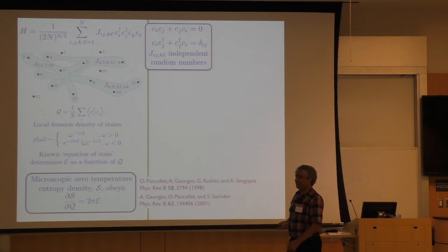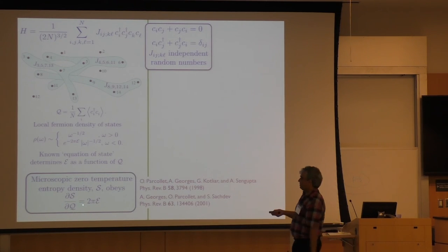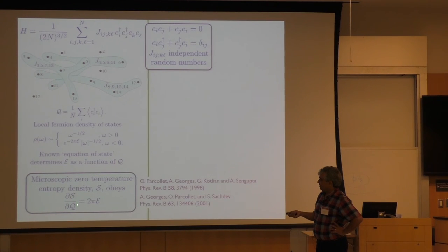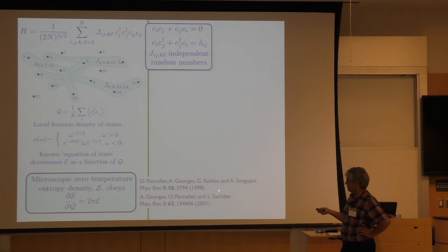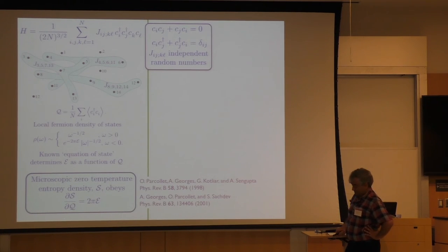The other thing I haven't mentioned is that this model turns out to have a macroscopic ground state entropy. This is part of the reason we were almost ashamed of this model — it violates the third law of thermodynamics. It has a ground state entropy density per site — a finite entropy density as temperature goes to zero. And it obeys this bizarre-looking relation: the derivative of the entropy with respect to the charge is this number E that appears in the particle-hole asymmetry. This goes back to work of Parcollet et al. on multichannel Kondo problems and conformal field theories.